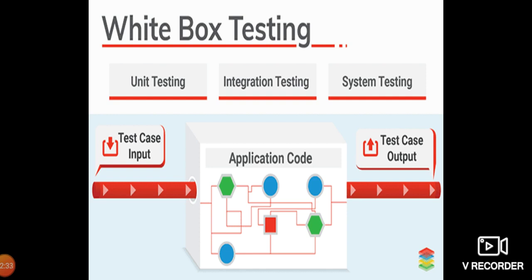All work that should be operated by the backend, or hidden side, is applied for black box testing. For example, in a company manufacturing software, whichever part of the software is hidden from the customer or client is tested with black box testing. Whichever part is shown to the customer — the front-end view — can be applied for white box testing.